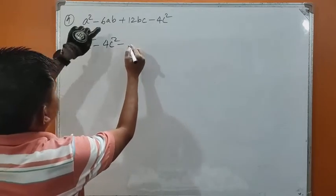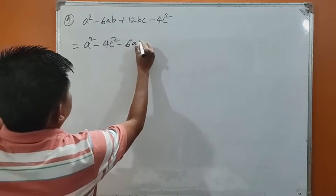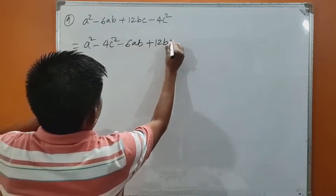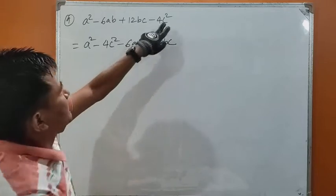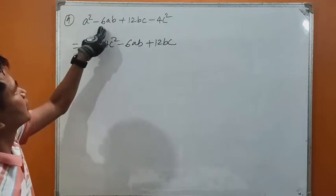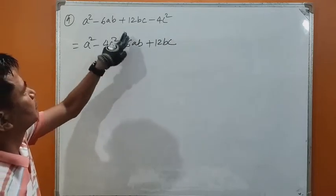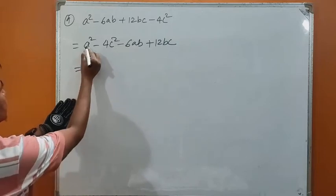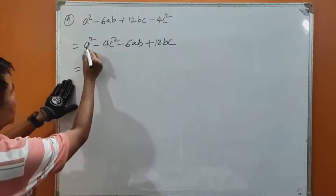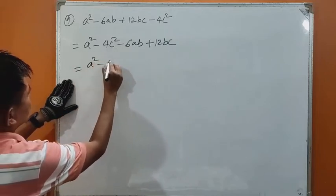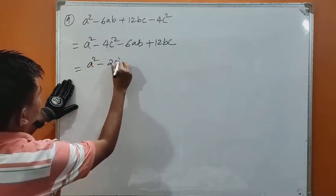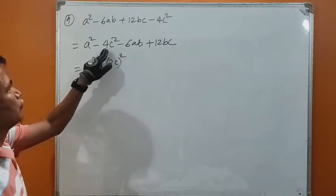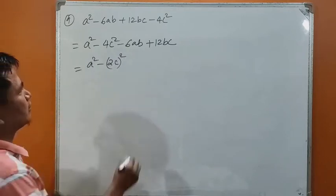And this minus 6ab, plus 12bc — minus 4c square comes here, minus 6ab here, plus 12bc here. Now this can be written as a minus 2c whole square, isn't it? Because 2 squared is 4, and c squared is c squared.